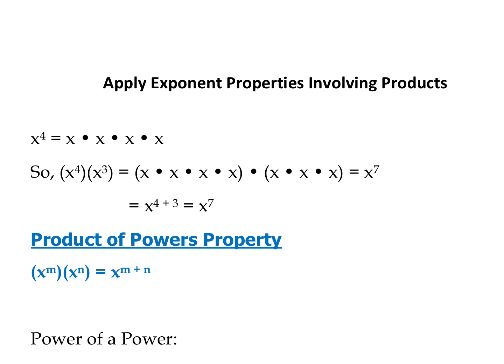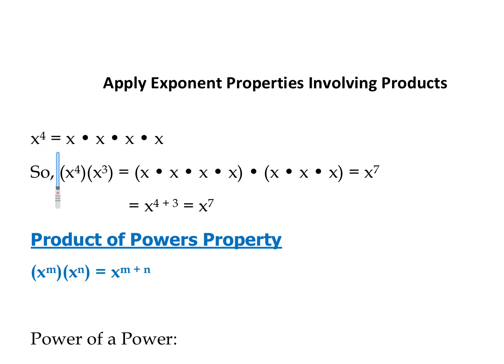Remember, an exponent is a number or a variable or some base raised to a power. We can see it here — the x is the base, the 4 is the power or the exponent. We have something raised to a power, that's how many times the base is being multiplied by itself. So x to the 4th means x is being multiplied by itself 4 times.